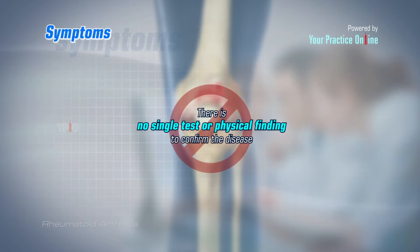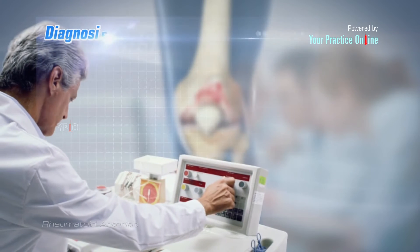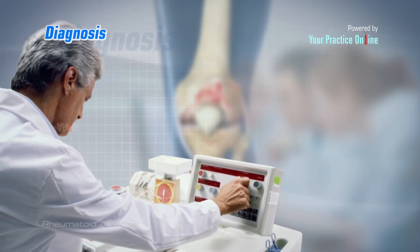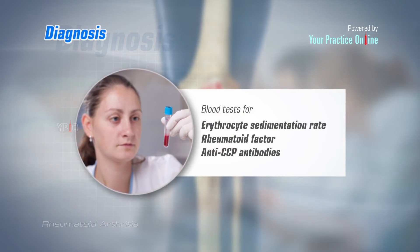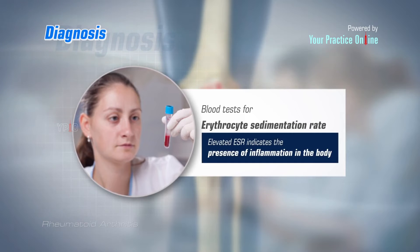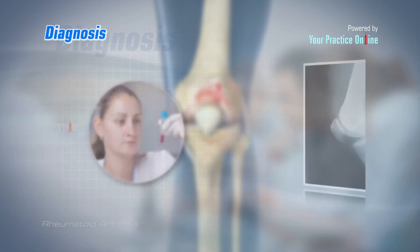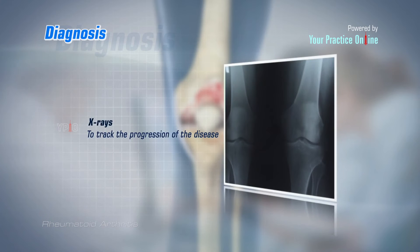The diagnosis of rheumatoid arthritis may include blood tests for erythrocyte sedimentation rate, rheumatoid factor, and anti-CCP antibodies. An elevated ESR indicates the presence of inflammation in the body. X-rays of the affected joint may be recommended to track the progression of the disease over a period of time.